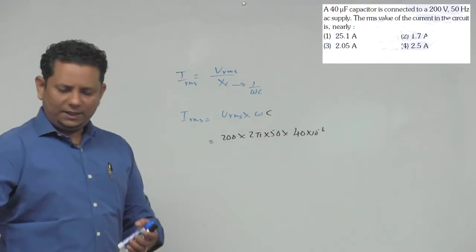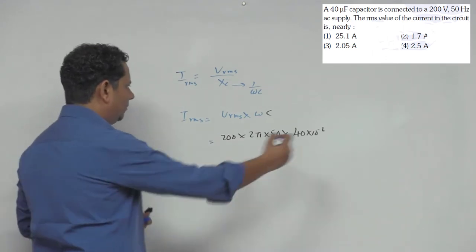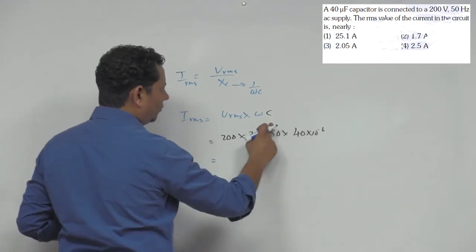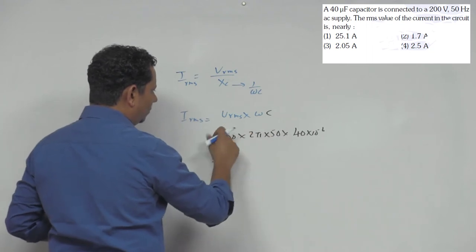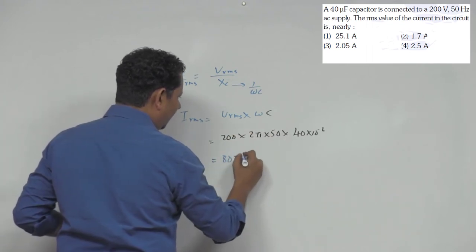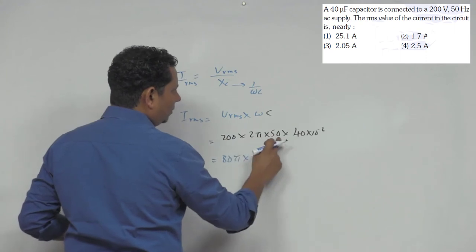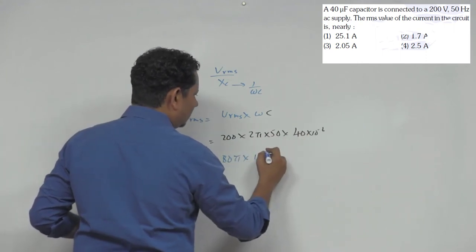Solve karke answer aa jayega. All right, isko jab multiply karenge so yeh value aa jayegi - this will be equal to 200 times 2 times 50, so 80 pi multiplied by 10 ki power - 1, 2, 3, 4 - 10 to the power minus